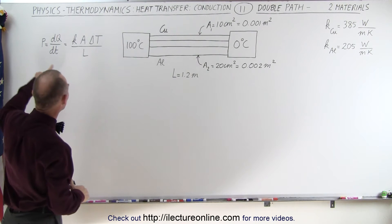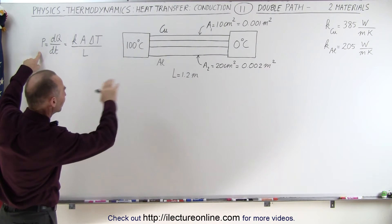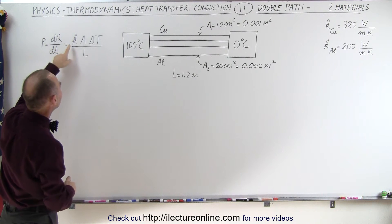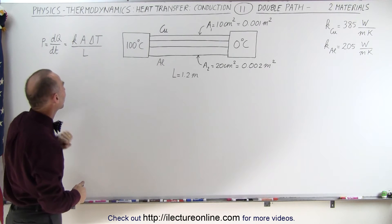Remember the equation that we're going to use. The amount of power transferred in heat across the path is equal to dQ/dt, the amount of heat transfer, Ka delta T divided by L.